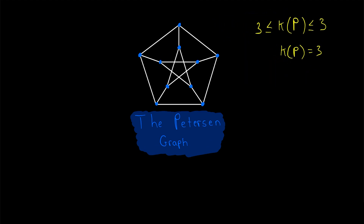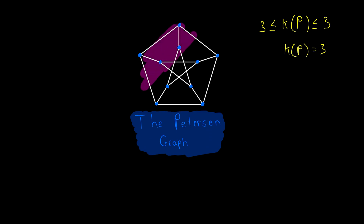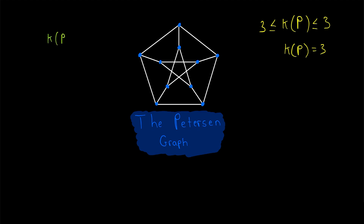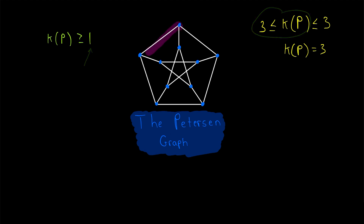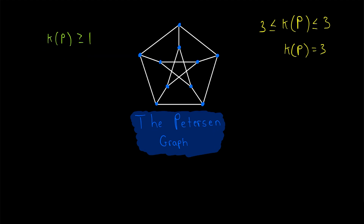I'll explain why the vertex connectivity of the Petersen graph is greater than or equal to three in two ways. This first way is a little less detail-oriented, but I think it's a simpler explanation that is pretty convincing. For starters, we note that the Petersen graph is connected, which means in order to disconnect it, we will have to delete some vertices. That immediately means the vertex connectivity is greater than zero, which means it's greater than or equal to one. The Petersen graph doesn't have that many vertices, so we can easily show that its connectivity has to be greater than one by observing what happens when we delete each of its vertices.